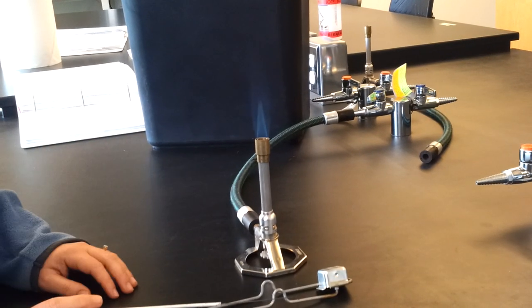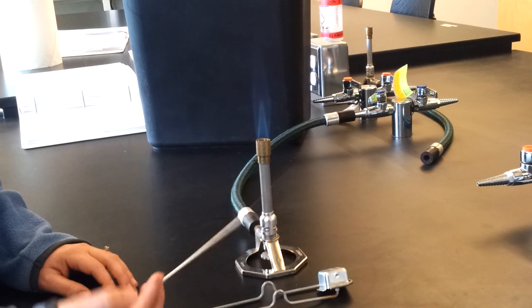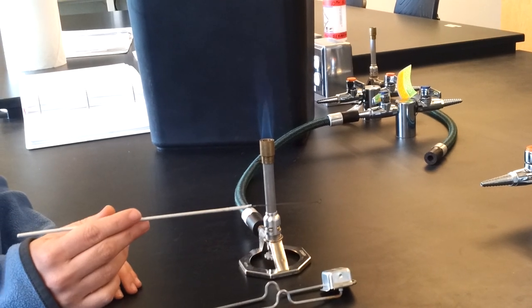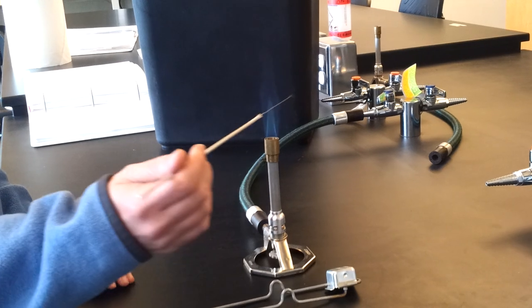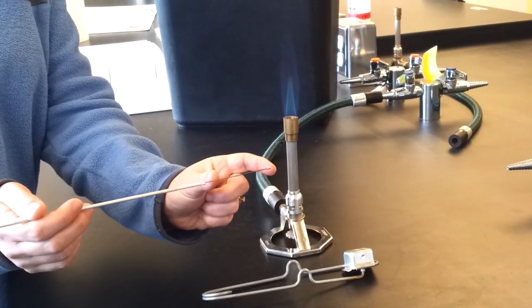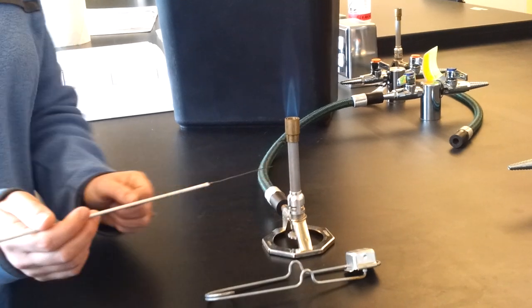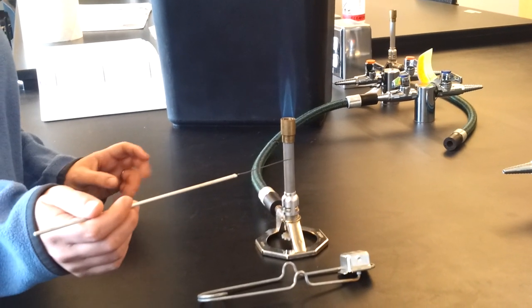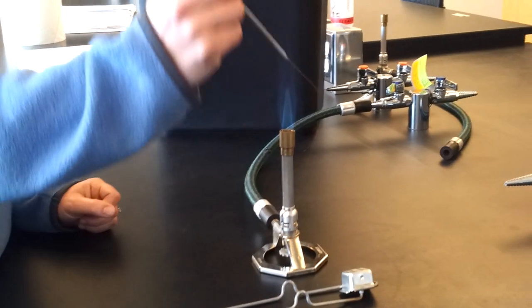Now the whole purpose of the flame is to sterilize your inoculating needle. This is what you'll be transferring bacteria with. So in order to sterilize it, you're going to put it in the flame and try to get about 90% of that wire an orange color. And as soon as it turns orange, you know that it's been properly sterilized.